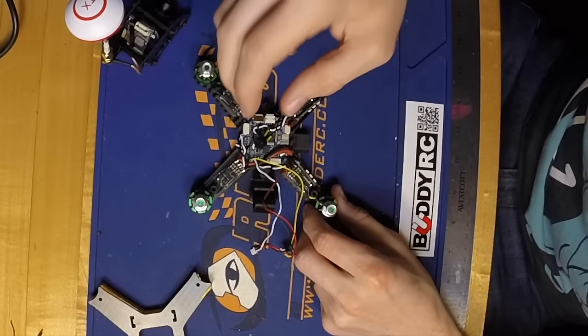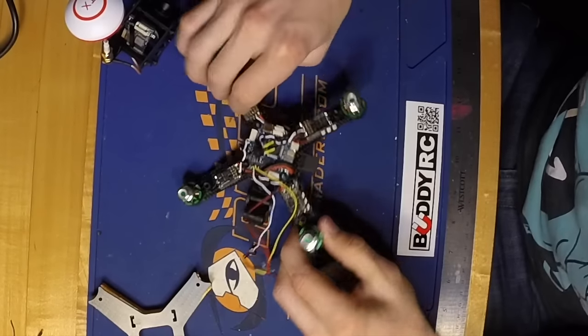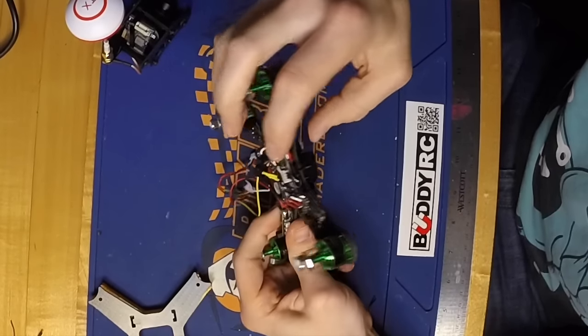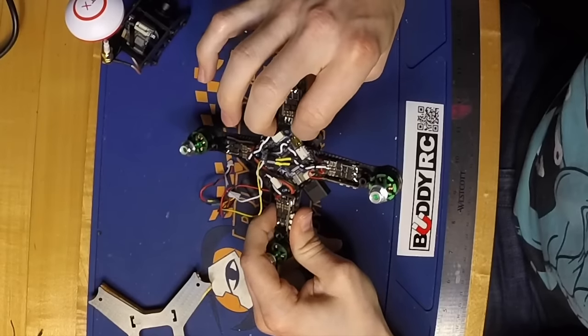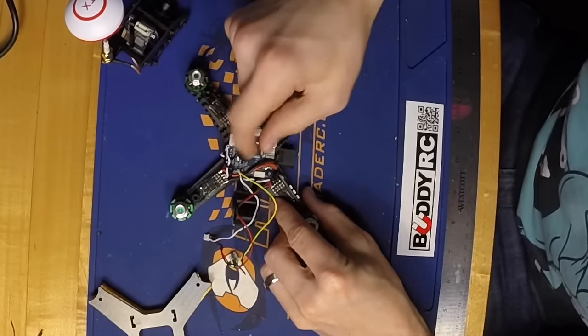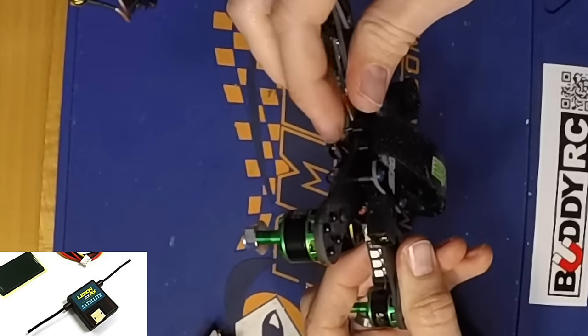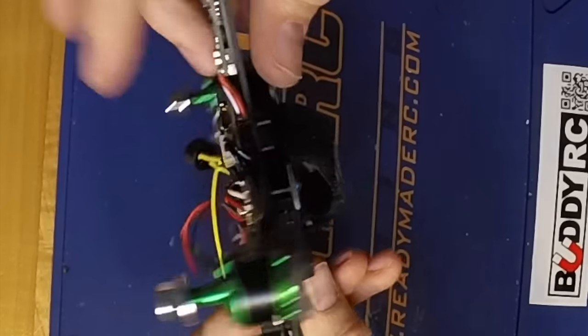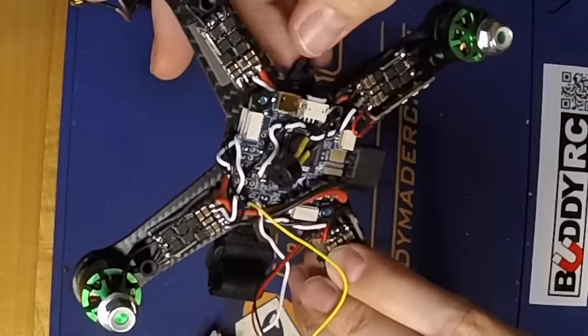Next I took the satellite receiver and dropped it on the PDB through the hole in the main plate. It sits sandwiched between the PDB and the flight controller. I took the receiver antenna wires and ran them out through the battery strap slots and through the holes in the 3D printed part. If you've got a receiver with longer antenna wires, you'll want to use the antenna straws and secure them into those holes.